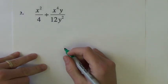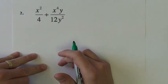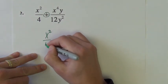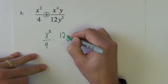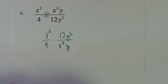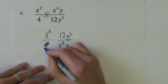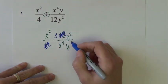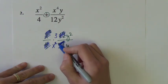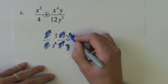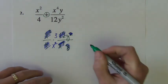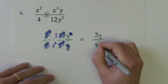Another division example — hit pause and try it yourself if you'd like. Change it to a multiplication problem: x squared over 4 times 12y squared over x to the 4th y. Now reduce: 4 goes into 12 three times; x squared takes out 2 of the x's, leaving x squared in the denominator; this y takes out 1 of those y's, leaving 1 y in the numerator. Final answer: 3y over x squared.